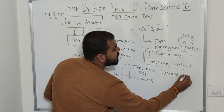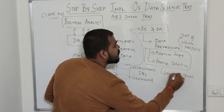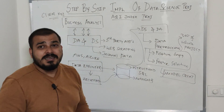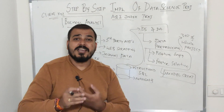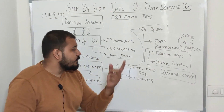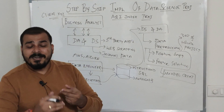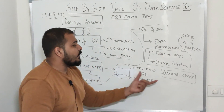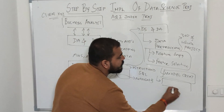After feature engineering and selection, model creation takes place. The model accuracy is evaluated — if the accuracy is good, we move ahead; otherwise, we go back to feature engineering and work with the data again. If the accuracy is good, the final step is deployment of the model.